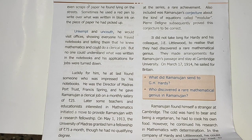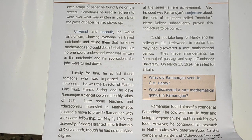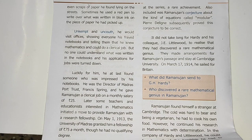Ramanujan searched for a job — not only for food but to buy papers for calculations. He needed about 2,000 sheets of paper every month. He would not leave a small bit of paper lying on the street. Even if papers were already written on, he would still scribble numbers — if something was written in blue ink, he used a red pen to overwrite and do his sums.